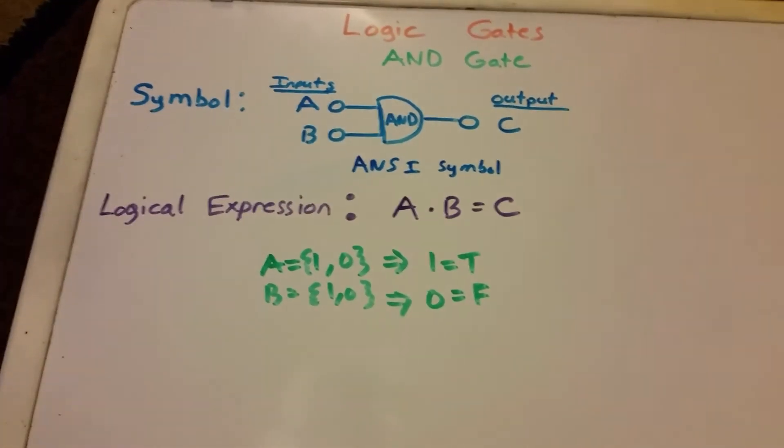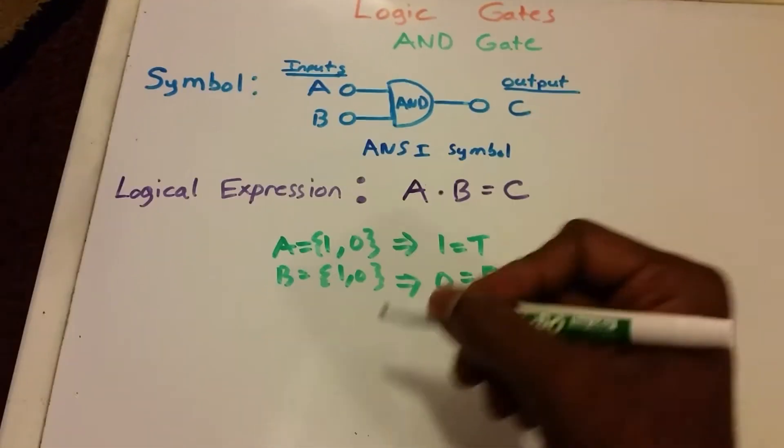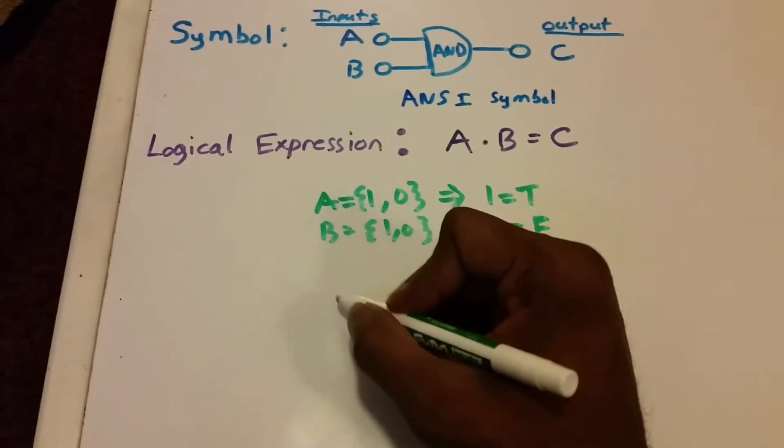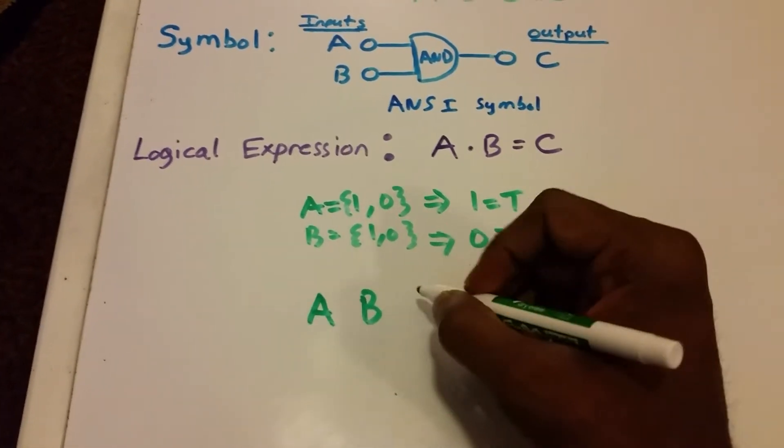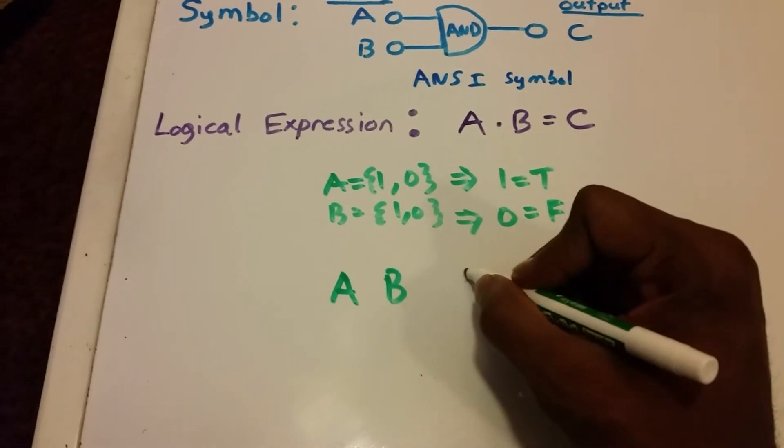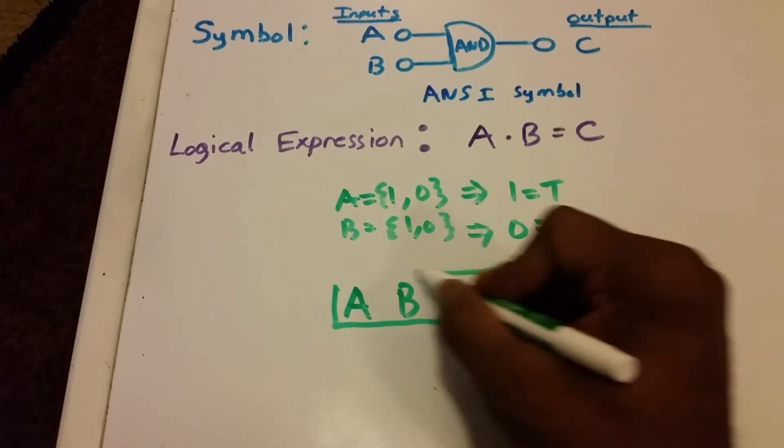Let's create a truth table here to see all of the possible outputs for our AND gate. First, I'm going to write down our input variables and our output variable.